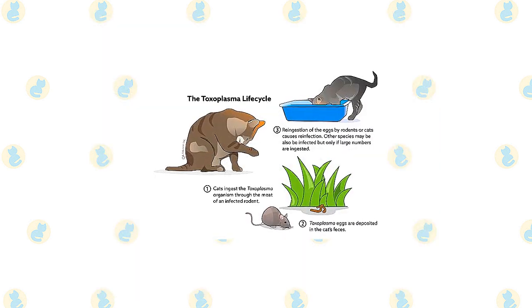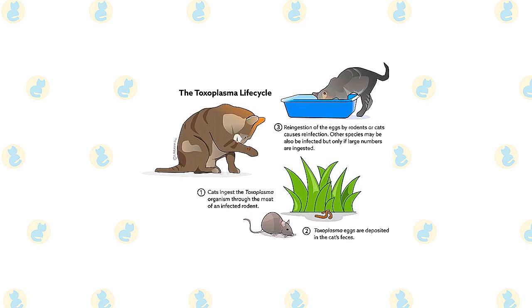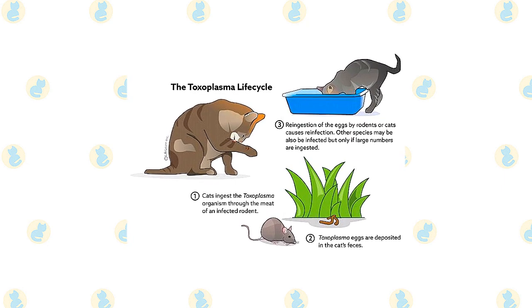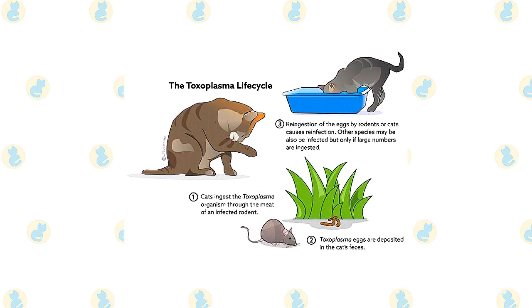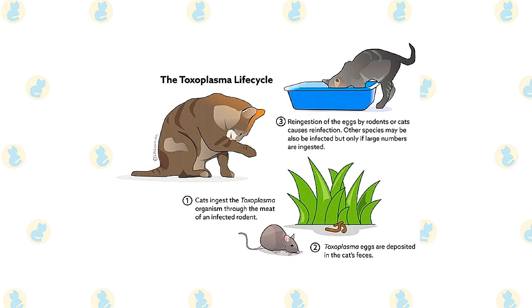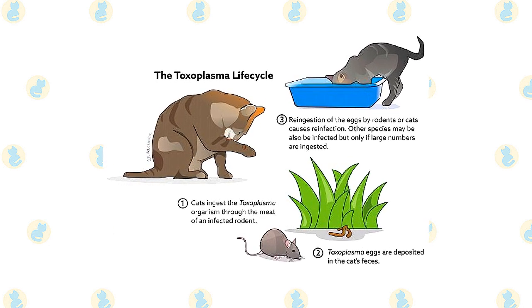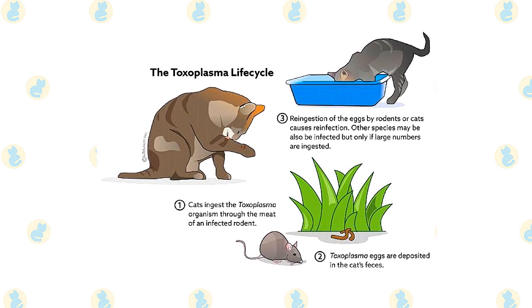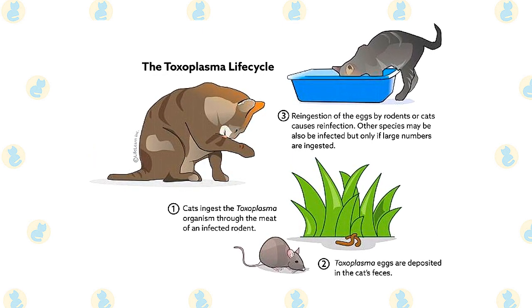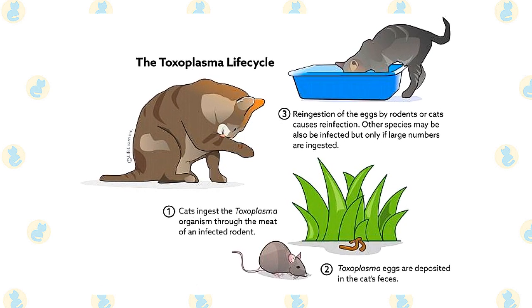The life cycle of T. gondii is complex and involves two types of hosts: definitive hosts, in which the parasite reproduces and forms eggs (oocysts), and intermediate hosts, in which it reproduces by making clones of itself, which cluster inside cysts. Wild and domestic cats are the only definitive hosts for T. gondii. When a cat ingests infected prey or raw meat, the parasite is released from cysts into the cat's digestive tract, where it reproduces and produces oocysts.